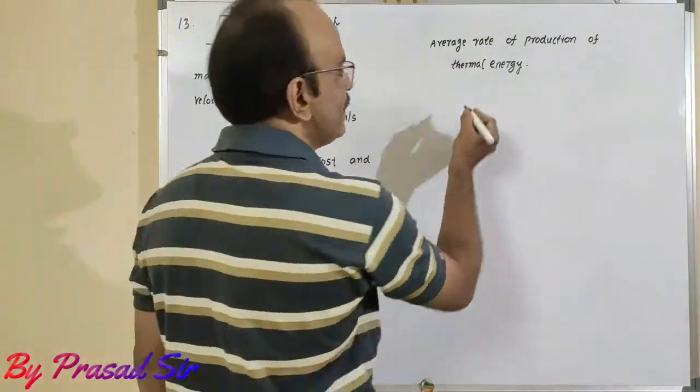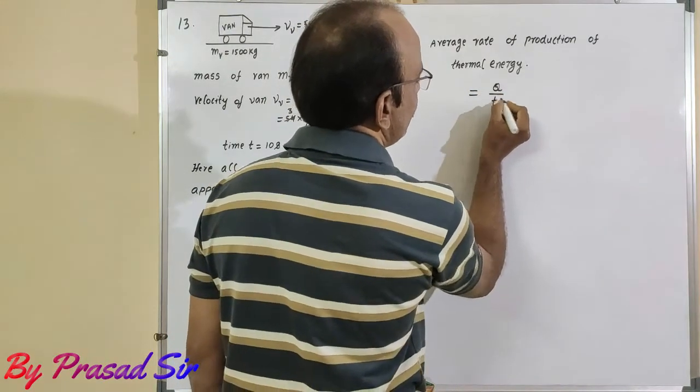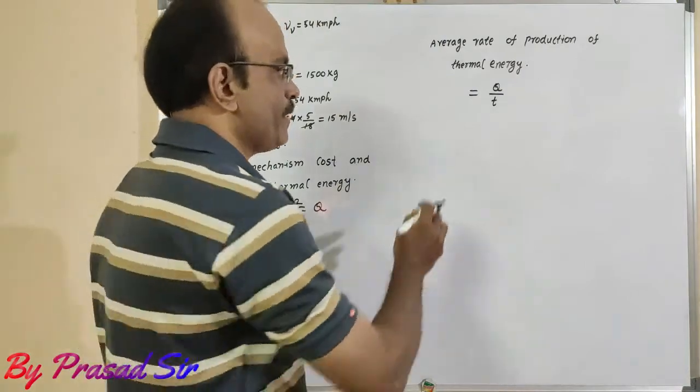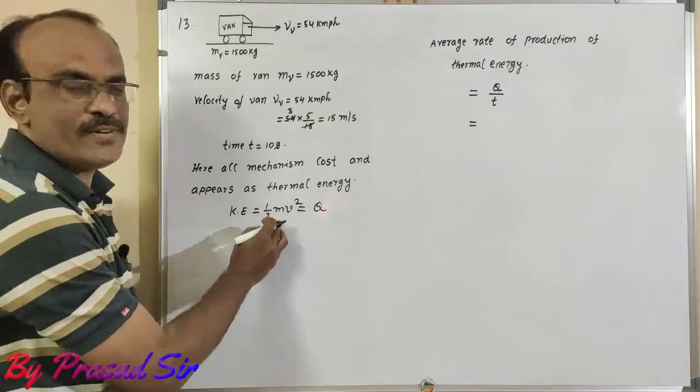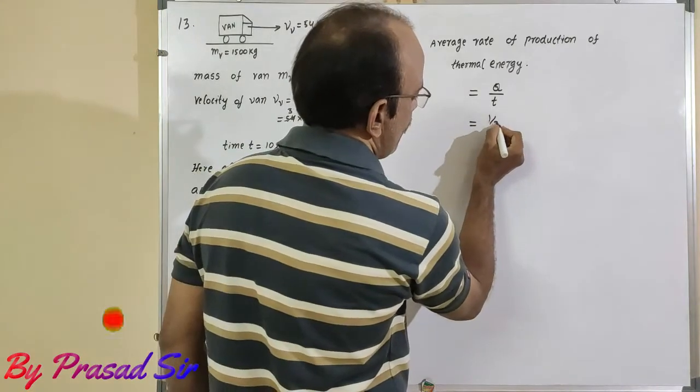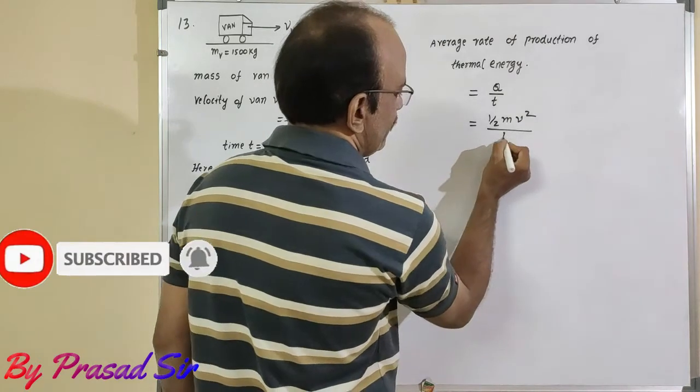So, average rate of production of thermal energy is nothing but q by t. But here, what is q? Half m v square. That is half m v square divided by t.